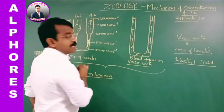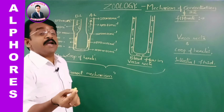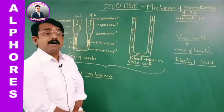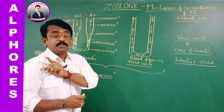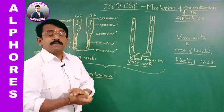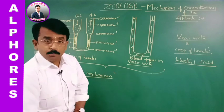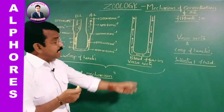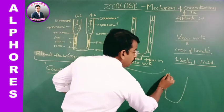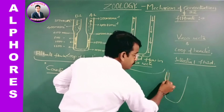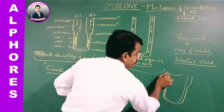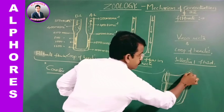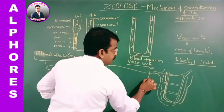The same counter-current is seen in the Vasa Recta. The blood supply to the renal tubule is by the efferent renal arteriole, which expands over different parts of the renal tubule — at PCT and DCT in the form of peritubular capillary net, and at the loop of Henle as Vasa Recta. This leads to the renal venule.